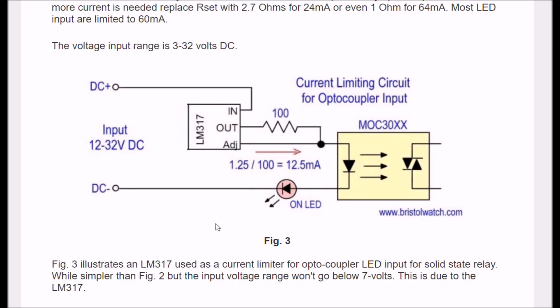Here is another current limiting input circuit. This is DC, but it only works 12 to 32 volts instead of 3 to 32, using our old friend the LM317. In this case, I used a 100 ohm resistor from the out to adjust. It's wired as shown. The formula is 1.25 divided by 100 will give you 12.5 milliamps.